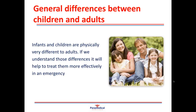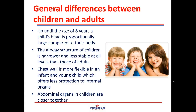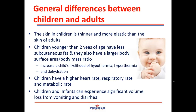Infants and children are physically very different to adults. Up until the age of eight years, a child's head is proportionally bigger relative to the body. The airway structure of children is generally narrower and less stable than an adult's. The chest wall in a child or infant is more flexible and offers less protection to internal organs such as the heart and lungs. The abdominal organs in children are closer together, so a child may be at higher risk of internal injuries in traumatic incidents.